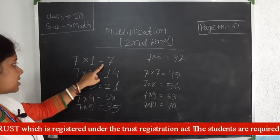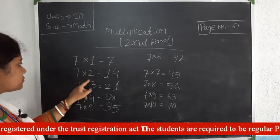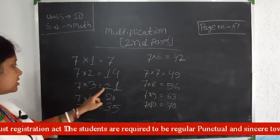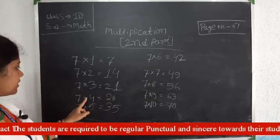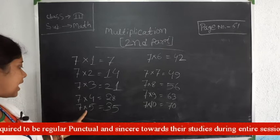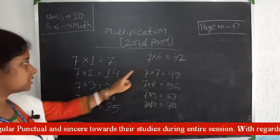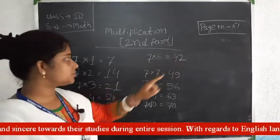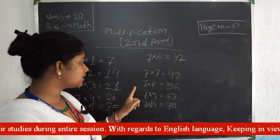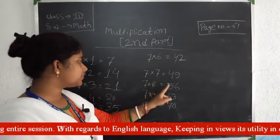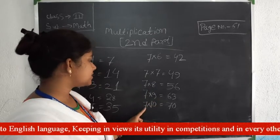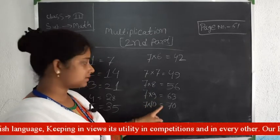7 ones are 7, 7 twos are 14, 7 threes are 21, 7 fours are 28, 7 fives are 35, 7 sixes are 42, 7 sevens are 49, 7 eights are 56, 7 nines are 63, 7 tens are 70.